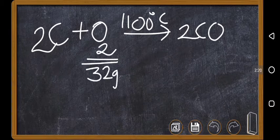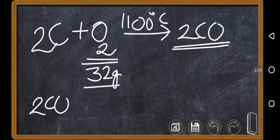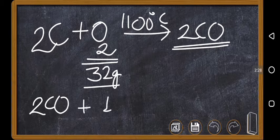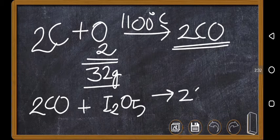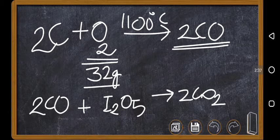32 grams of oxygen, if you are taking, you are getting two moles of carbon monoxide. These two moles of carbon monoxide will react with I2O5 to convert into 2CO2. Actually this is not a balanced equation, but for balancing purposes you can write it differently.